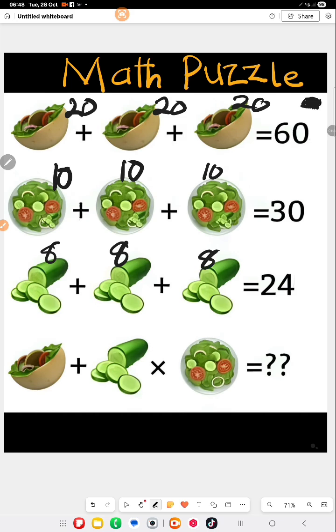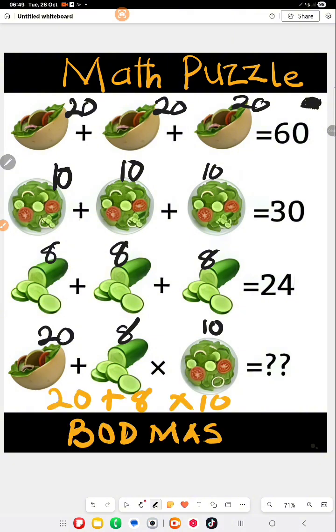Then the last one, we have this to be 20, cucumber to be 8, and the last one to be 10. And the question is 20 plus 8 times 10. We use BODMAS, and BODMAS we consider multiplication first.